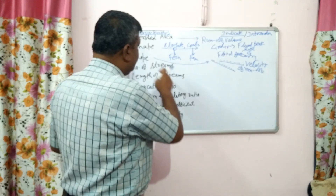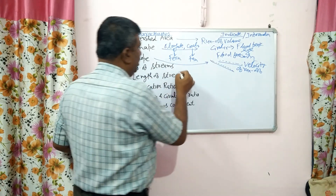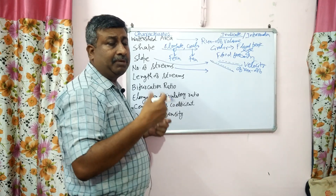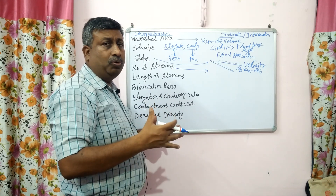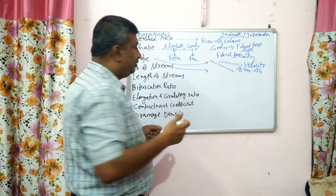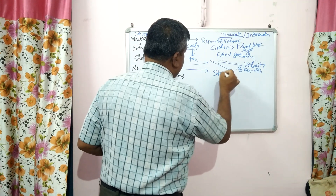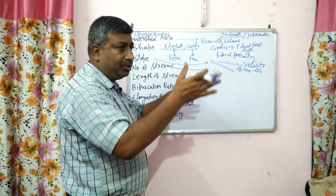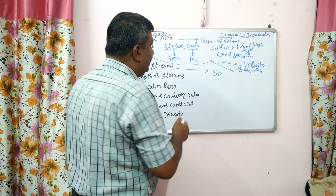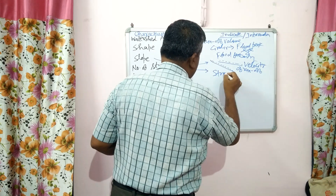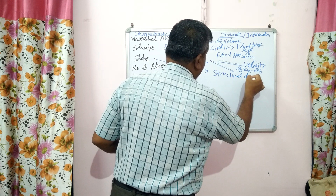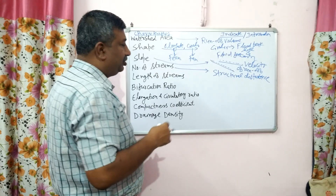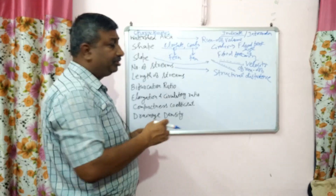Number of streams is related with structural disturbances. If structural disturbances are more — like small hills, plateaus, or rocks — then the number of streams will be more, because there will be distortion of drainage. So more number of streams and channels indicates there are more structural disturbances.